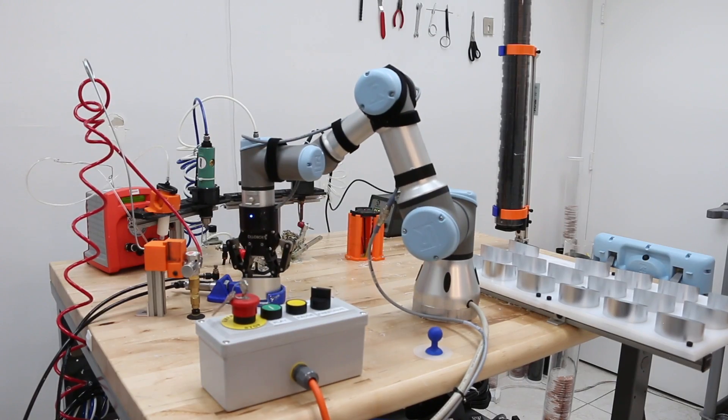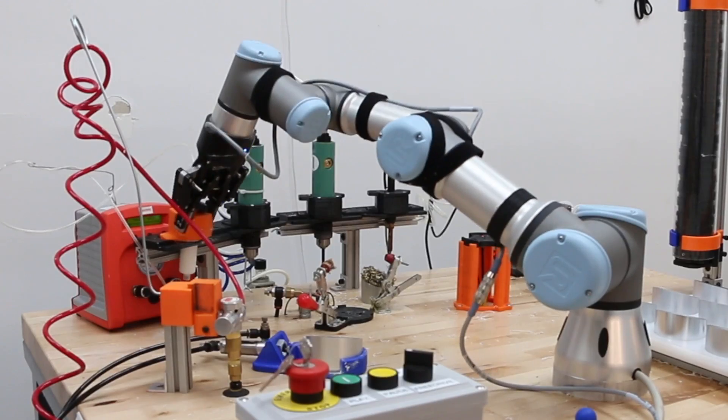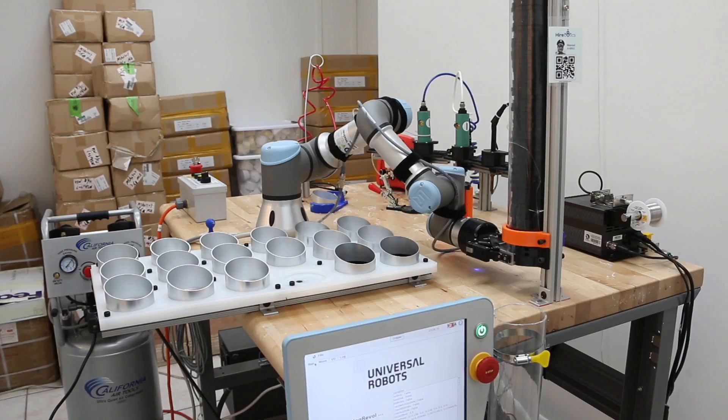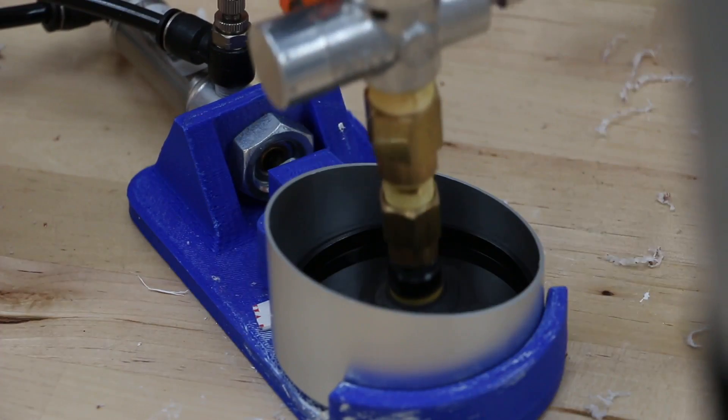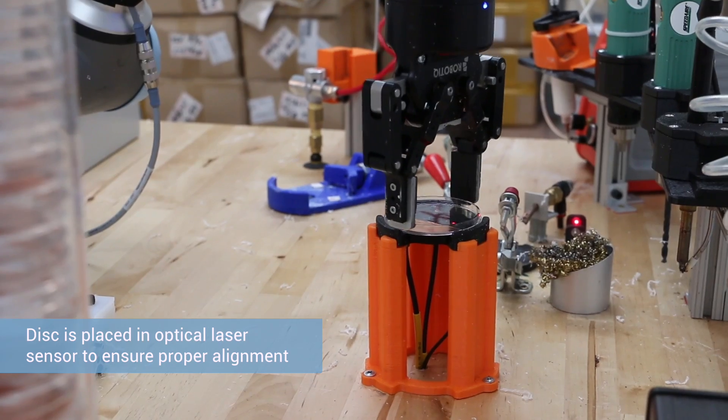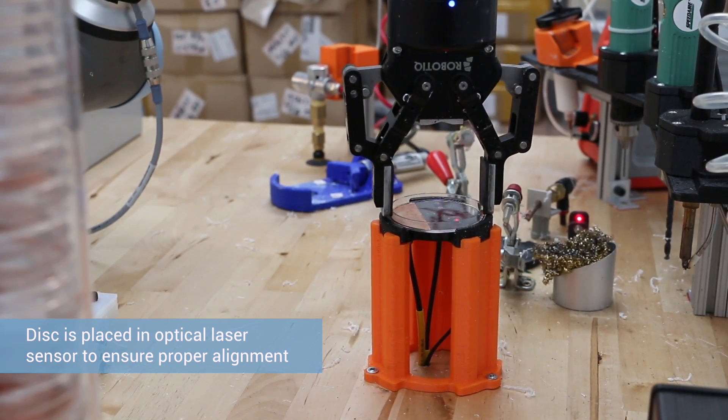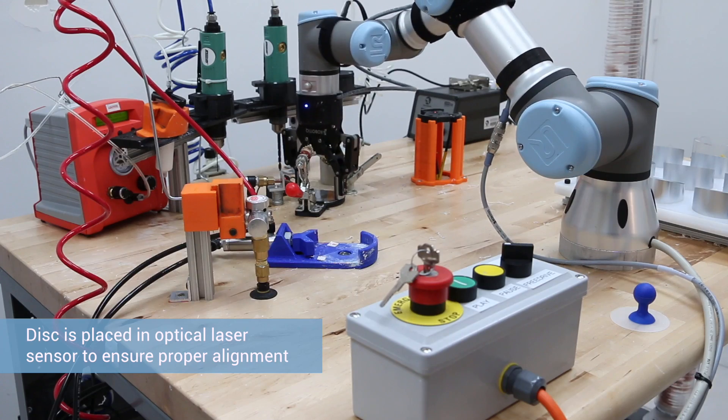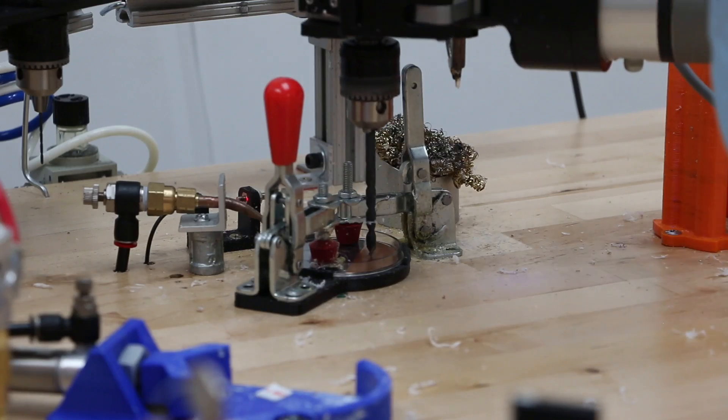The robot places the part into a clamp and aligns a silicone, then places a disc on top of the silicone. The next step is drilling. The UR3 places a disc into a laser sensor, then moves it to a holder and grabs a drill from the utility belt.